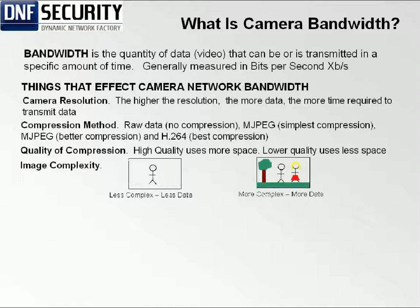Image complexity also plays a role. The amount of data a camera is capturing combined with the compression algorithms greatly affects how much data you have. If you're compressing purely black and white data, you don't have as much information to move as you do with color. And the more objects, the more colors, the more things within the field of view of the camera makes it more complex — and consequently, more data is transferred.